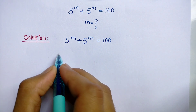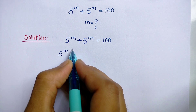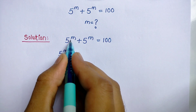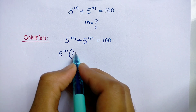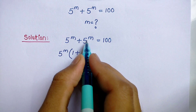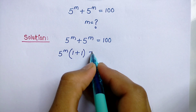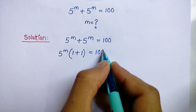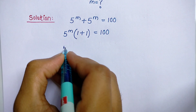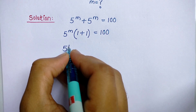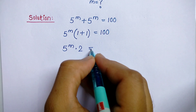We take 5 power m common. So we get 5 power m in bracket: 5 power m divided by 5 power m is 1, plus 5 power m divided by 5 power m is 1, is equal to 100. So 5 power m times (1 plus 1) equals 100.